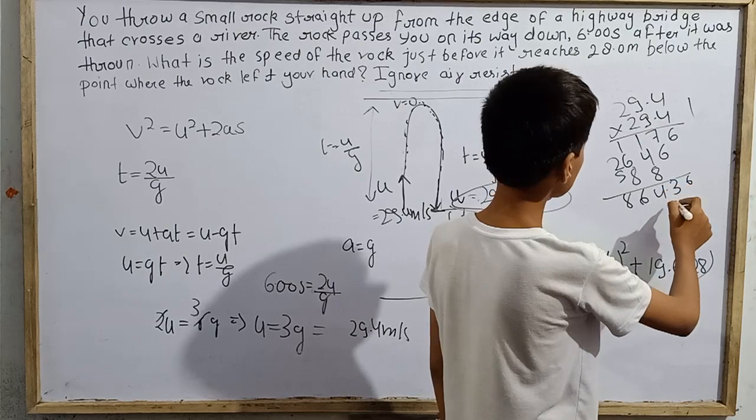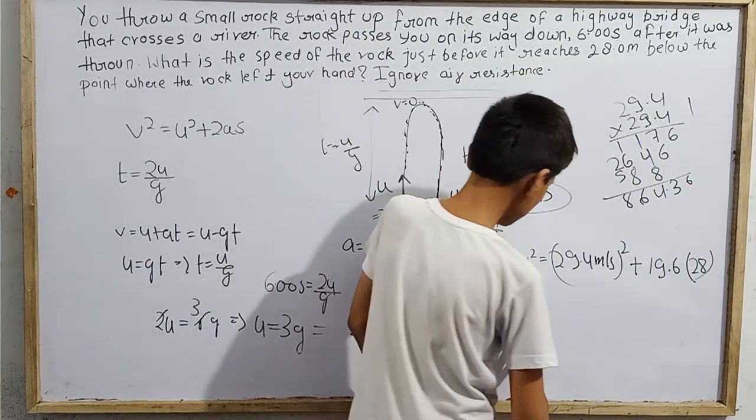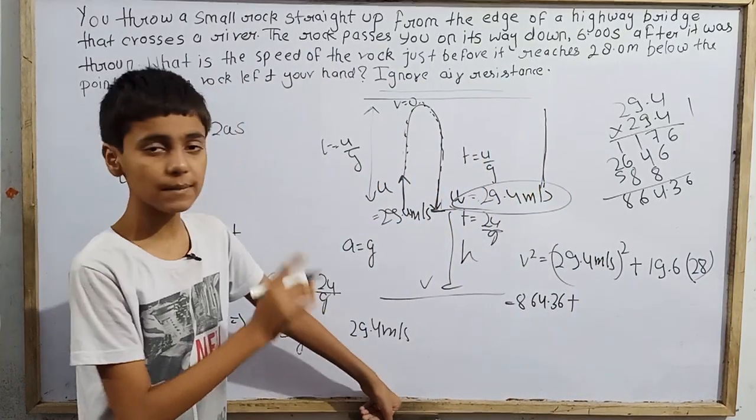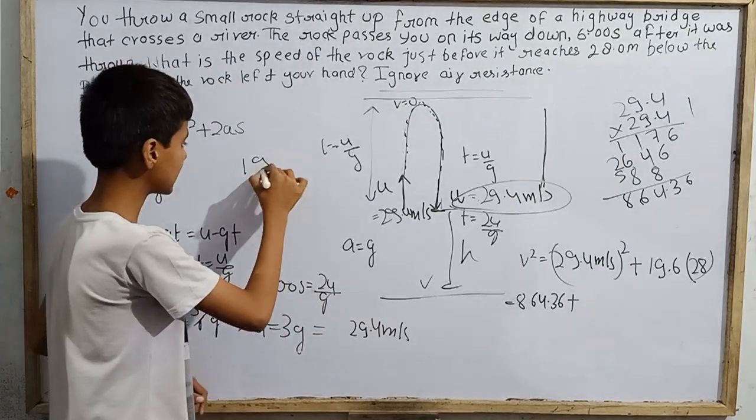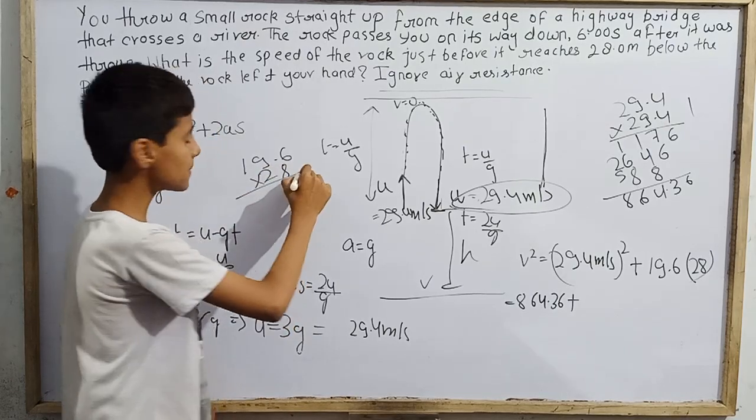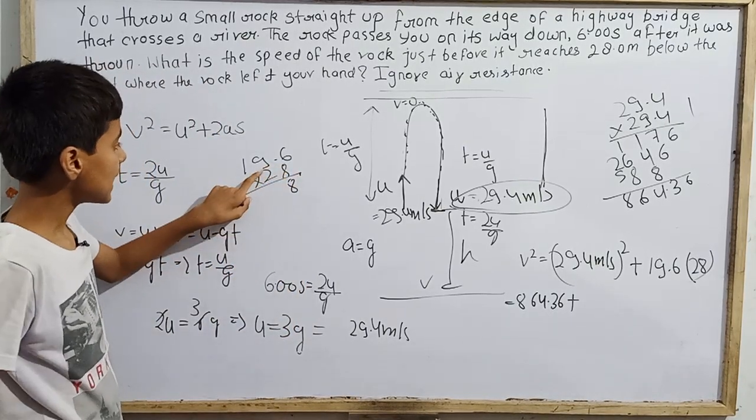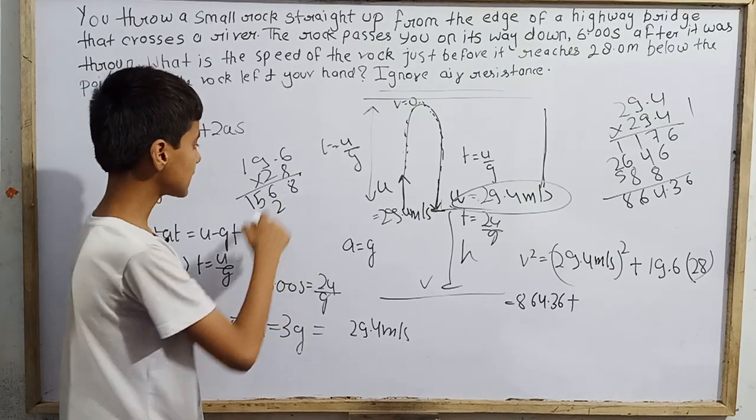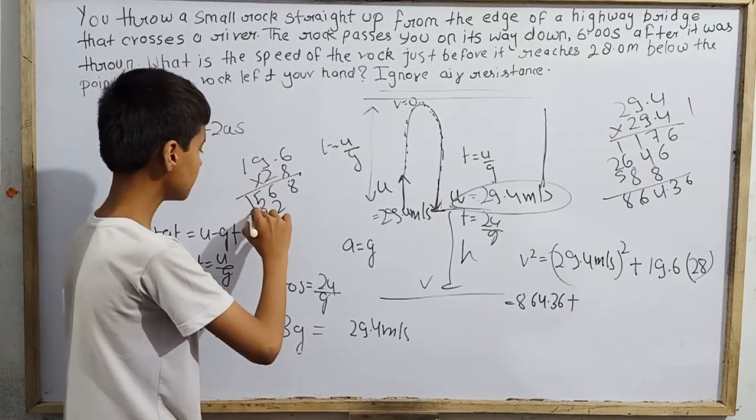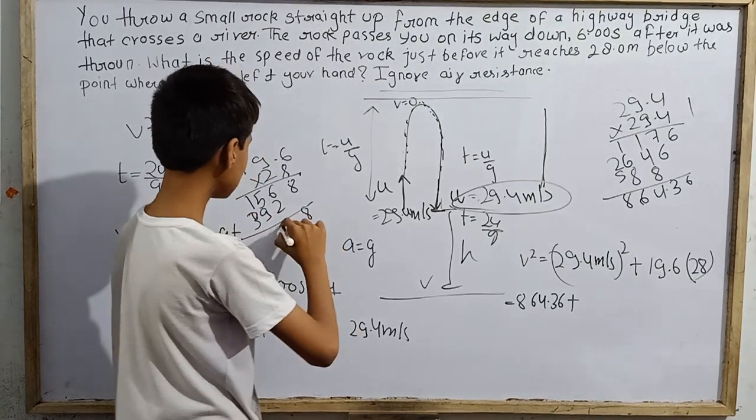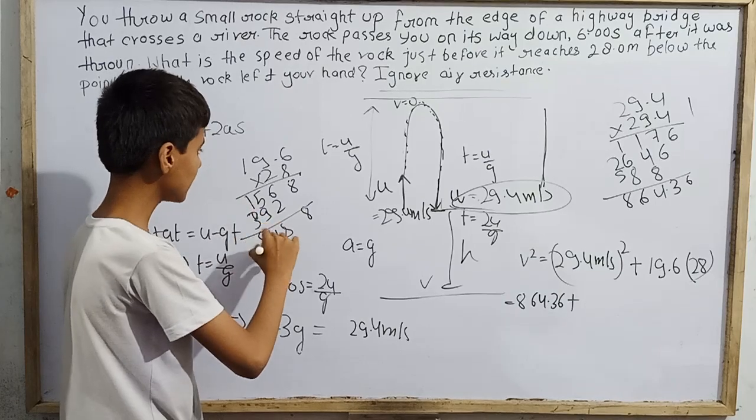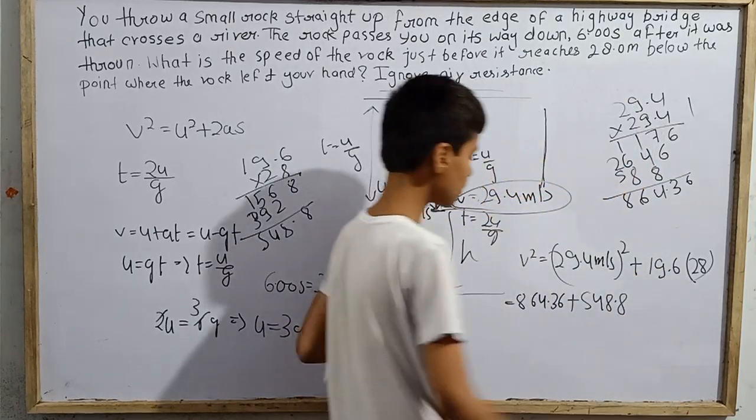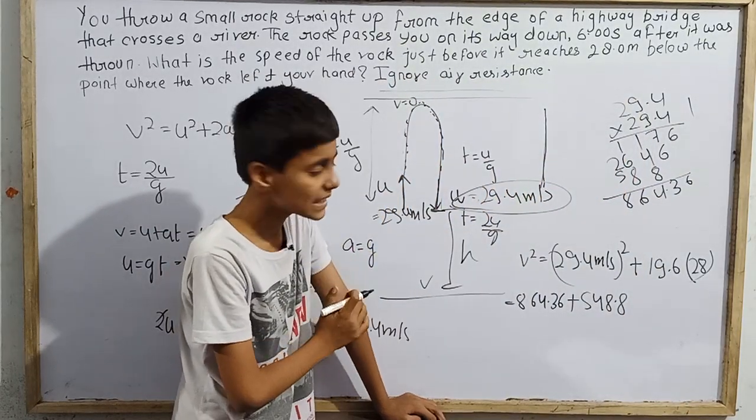So we get 864.36. Now plus 2 times acceleration times distance. Since downward is positive, 2a where a is 9.8, so 19.6 times 28 meters. Let's multiply 19.6 by 28. Working through the calculation: 8 times 8 is 64, carry 6. Continuing the multiplication gives us 548.8.